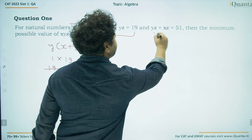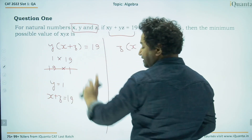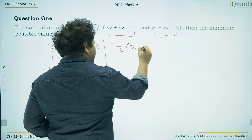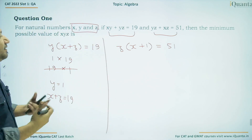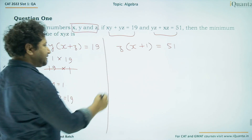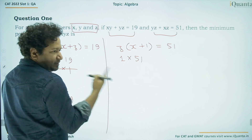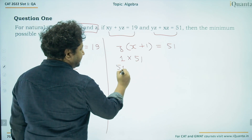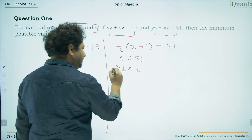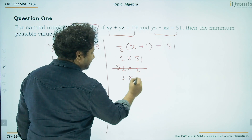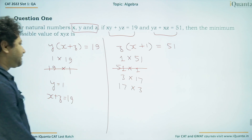Let us take the other expression: yz + xz = 51. We can take z common, so z(x + y) = 51. Since y = 1 is already established, we have z(x + 1) = 51. Now 51 can be broken in different ways. If z = 1 and x + 1 = 51, that is one way. Another way is z = 51 and x + 1 = 1, but that is not possible since x + 1 must be at least 2. Then we also have 3 × 17 and 17 × 3.